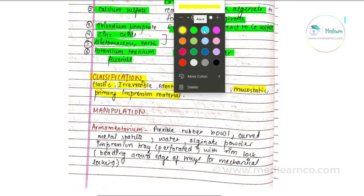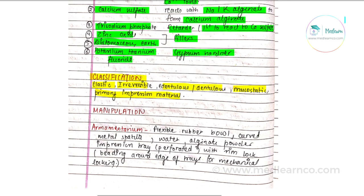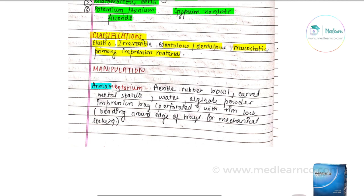How do we manipulate alginate? First, the armamentarium required: a flexible rubber bowl, a metal spatula, water, alginate powder, and impression trays — perforated trays with a rimlock system. The rimlock is a rim around the edge of the tray for mechanical locking.